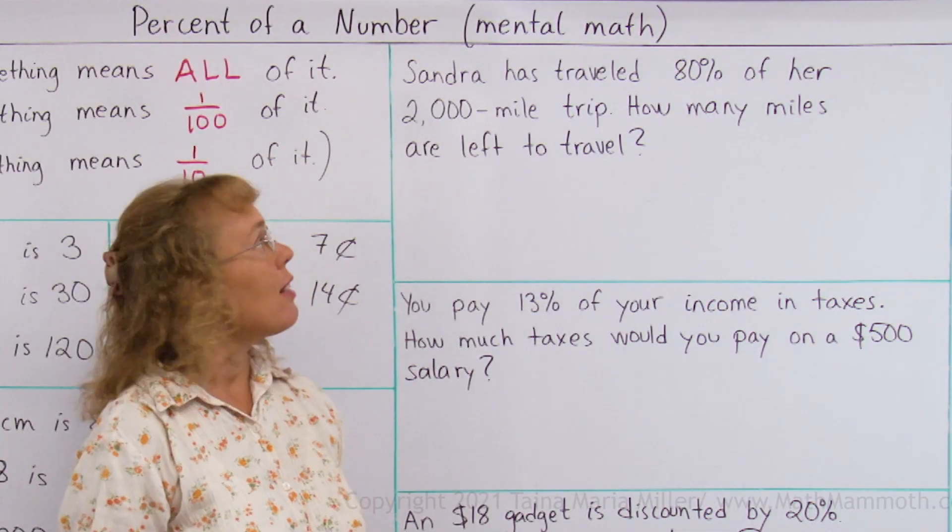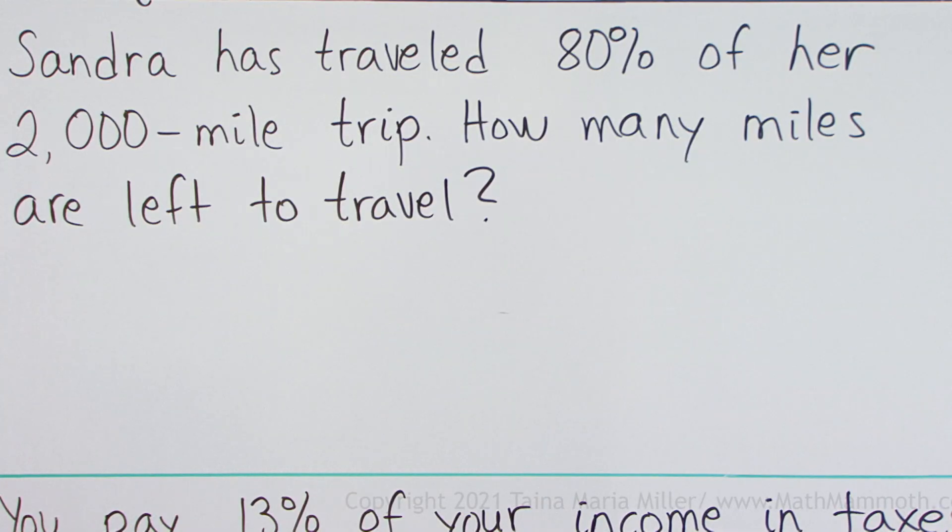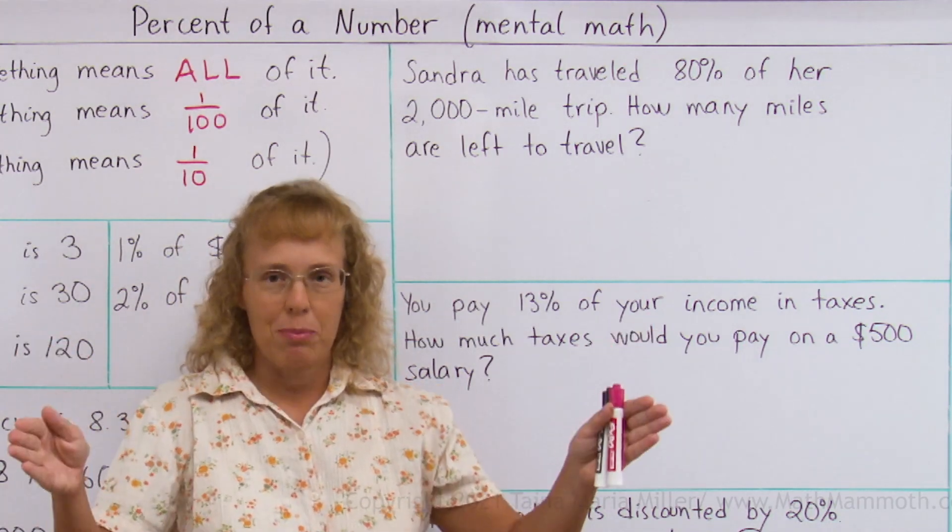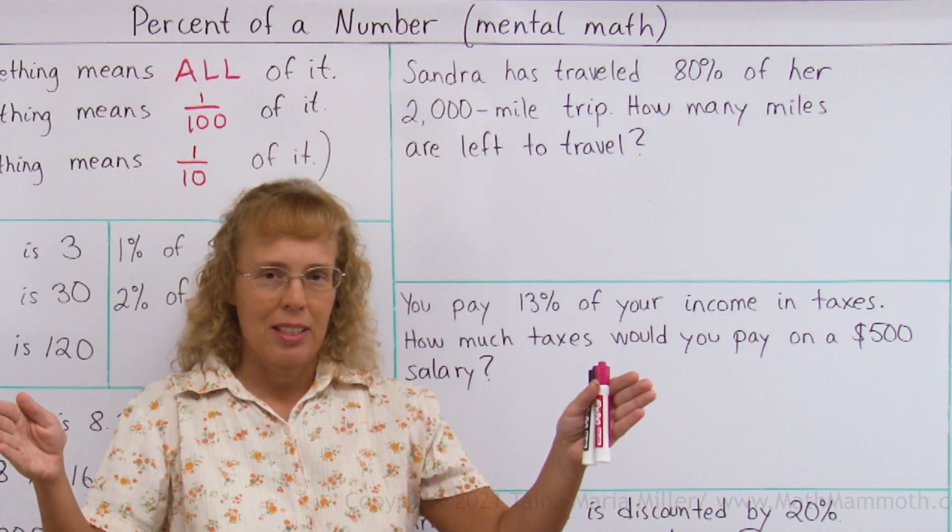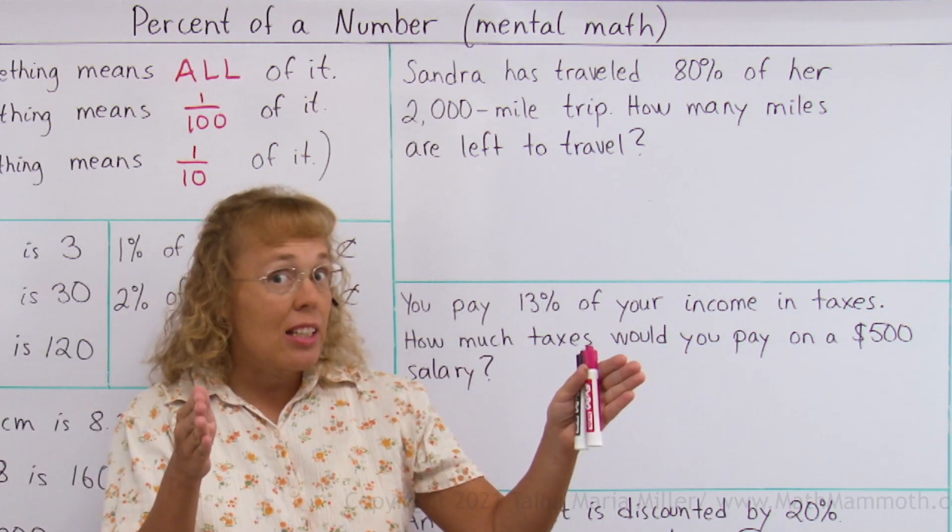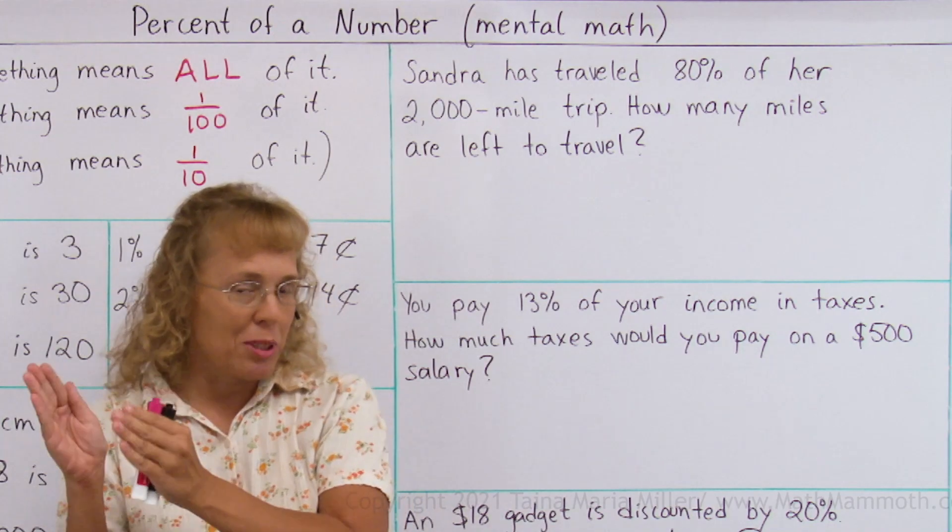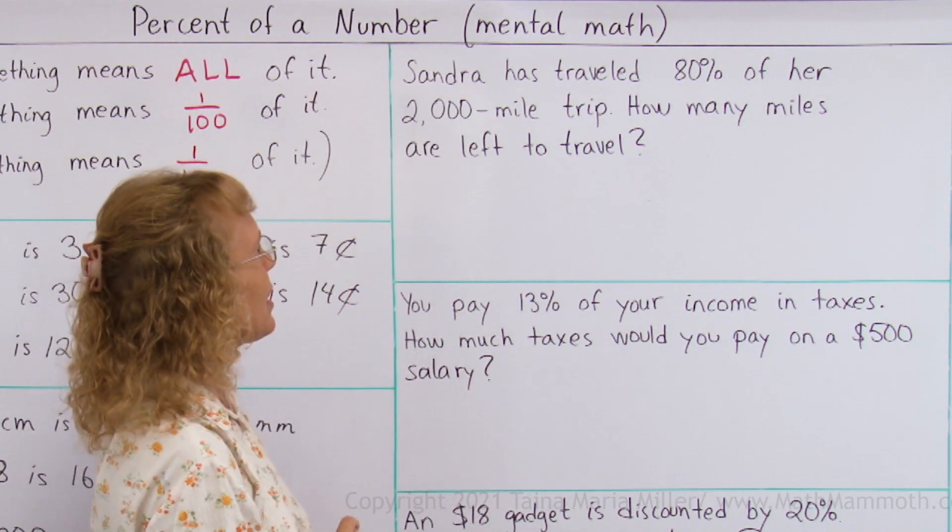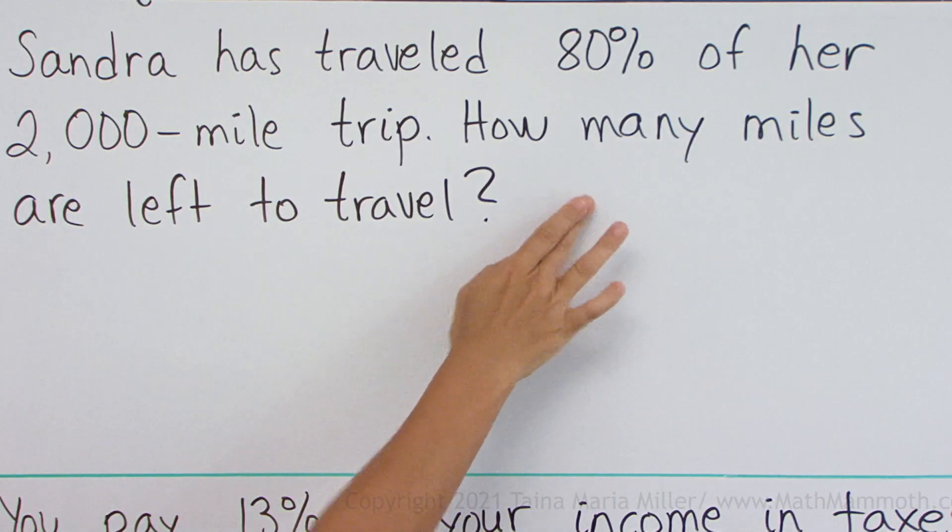Sandra has traveled eighty percent of her two thousand mile trip. How many miles are left to travel? Think of her trip, if it's here, the whole trip. It's one hundred percent. She's traveled eighty percent. How many percent are left to travel? Twenty percent.